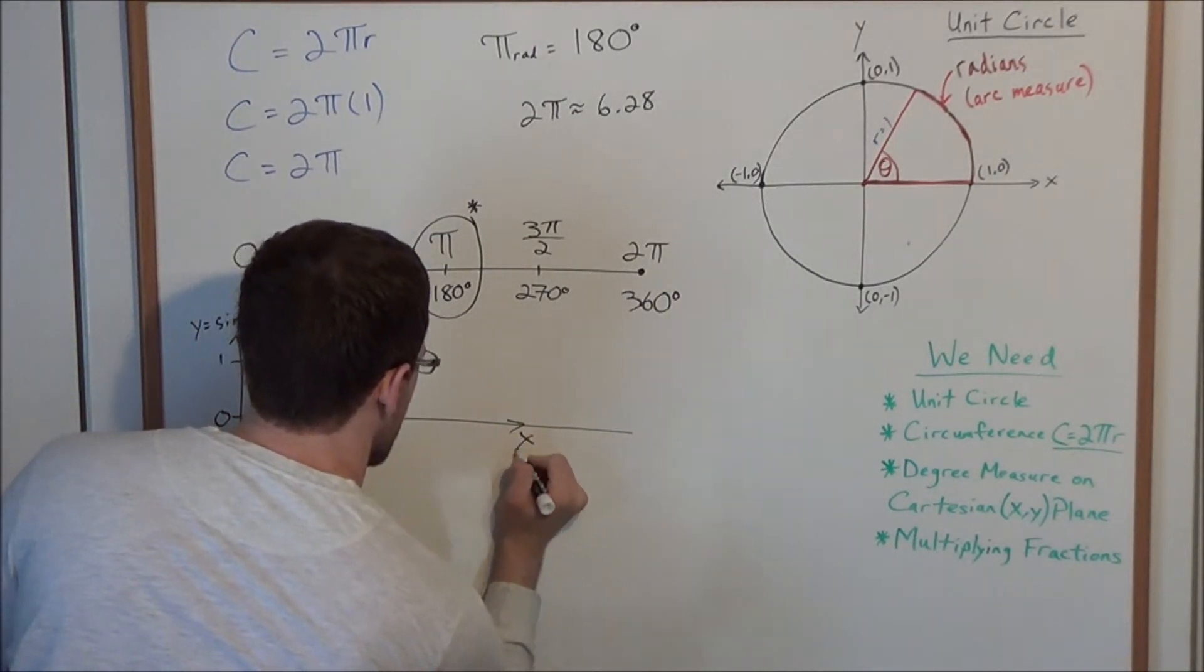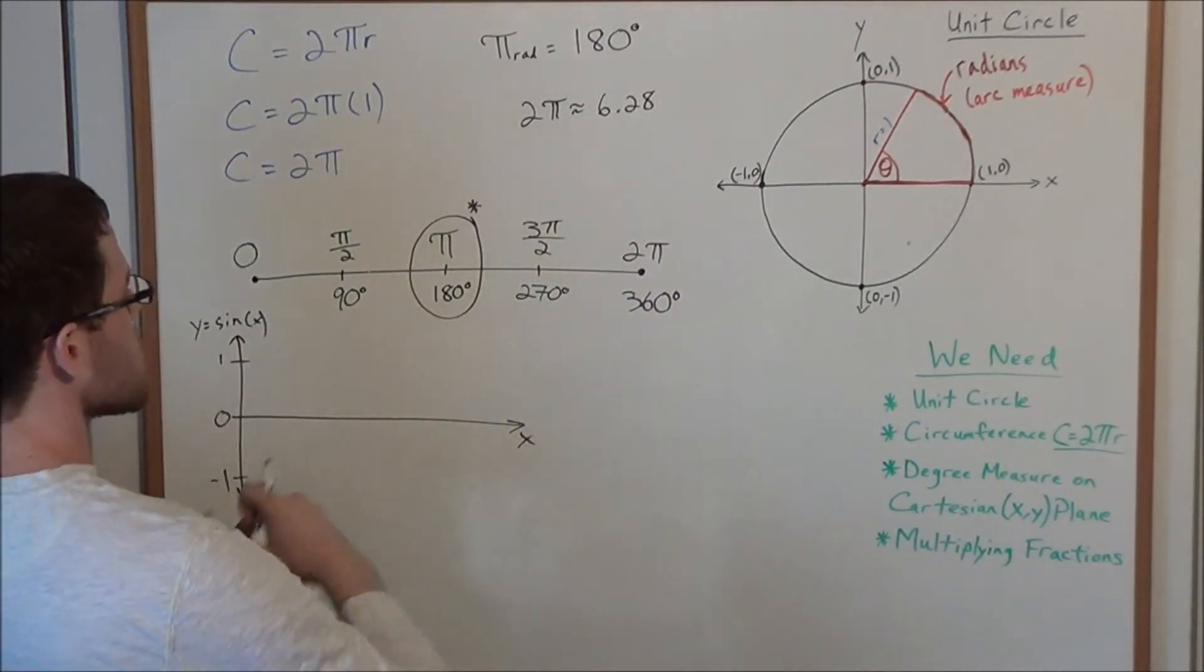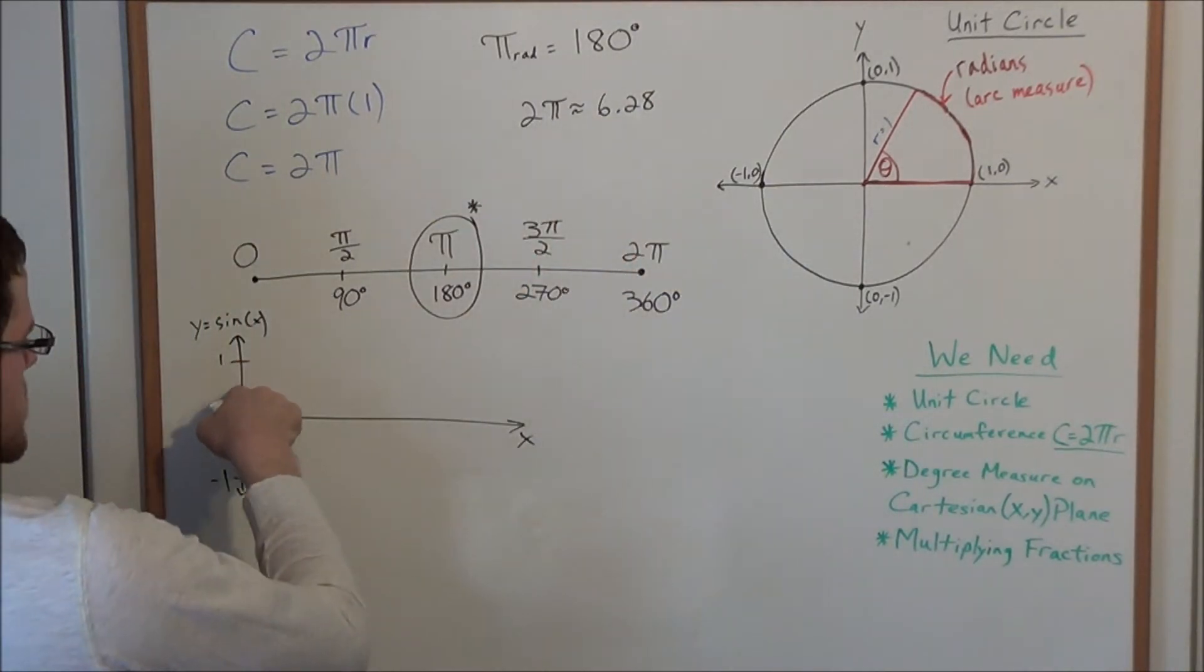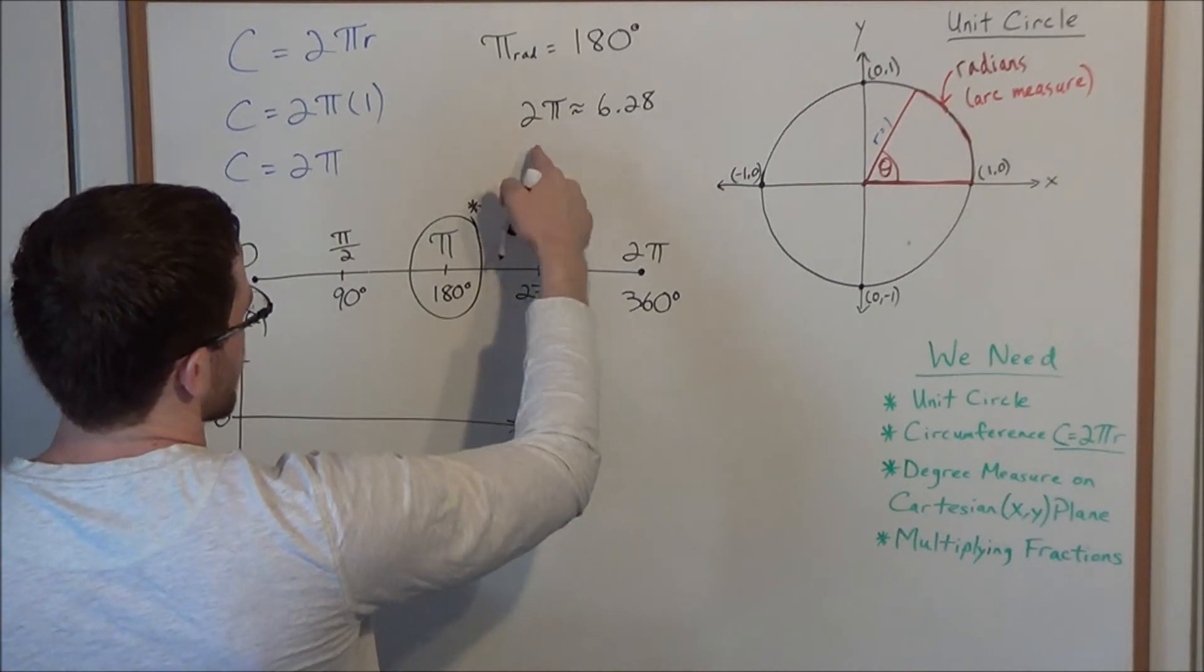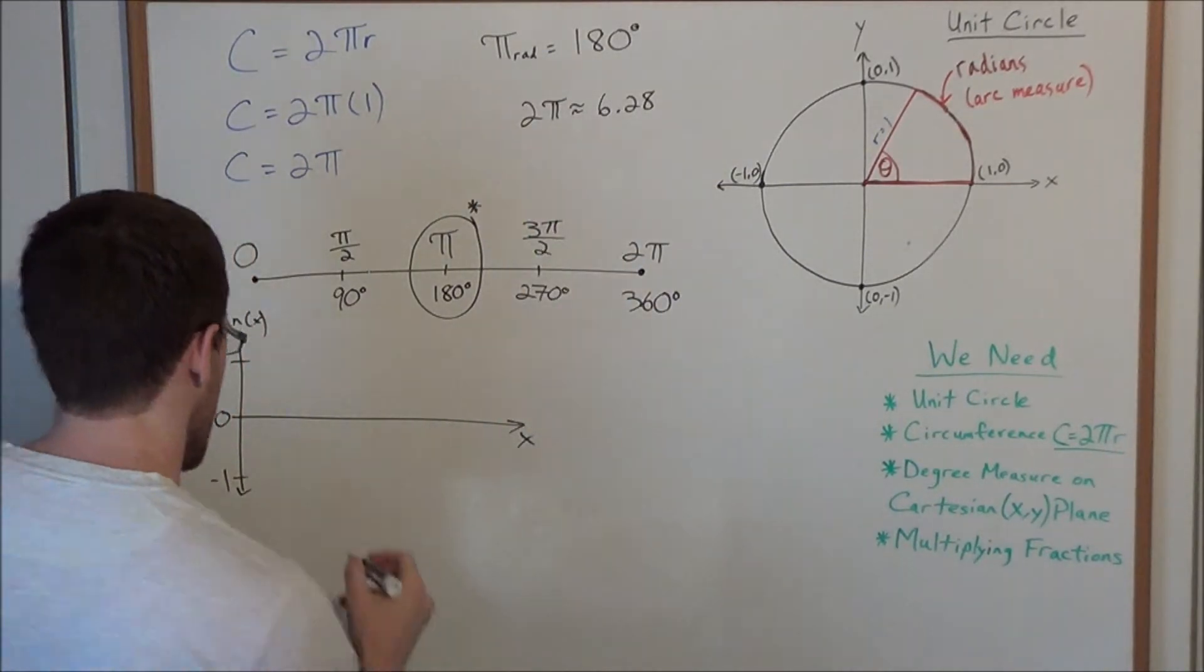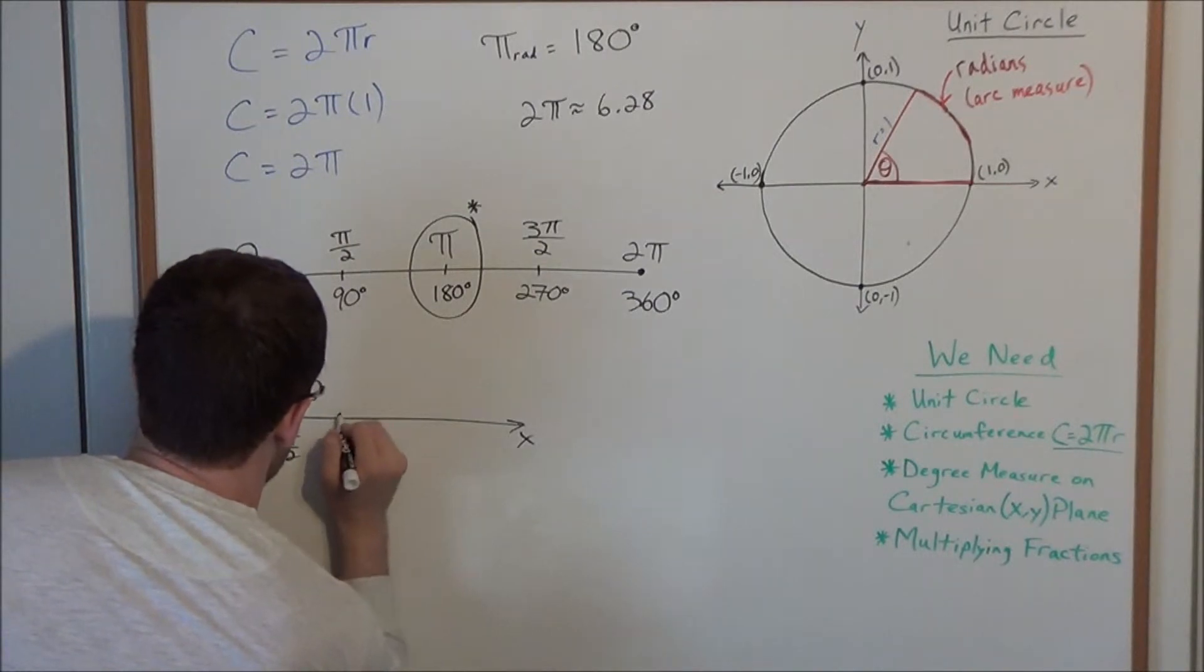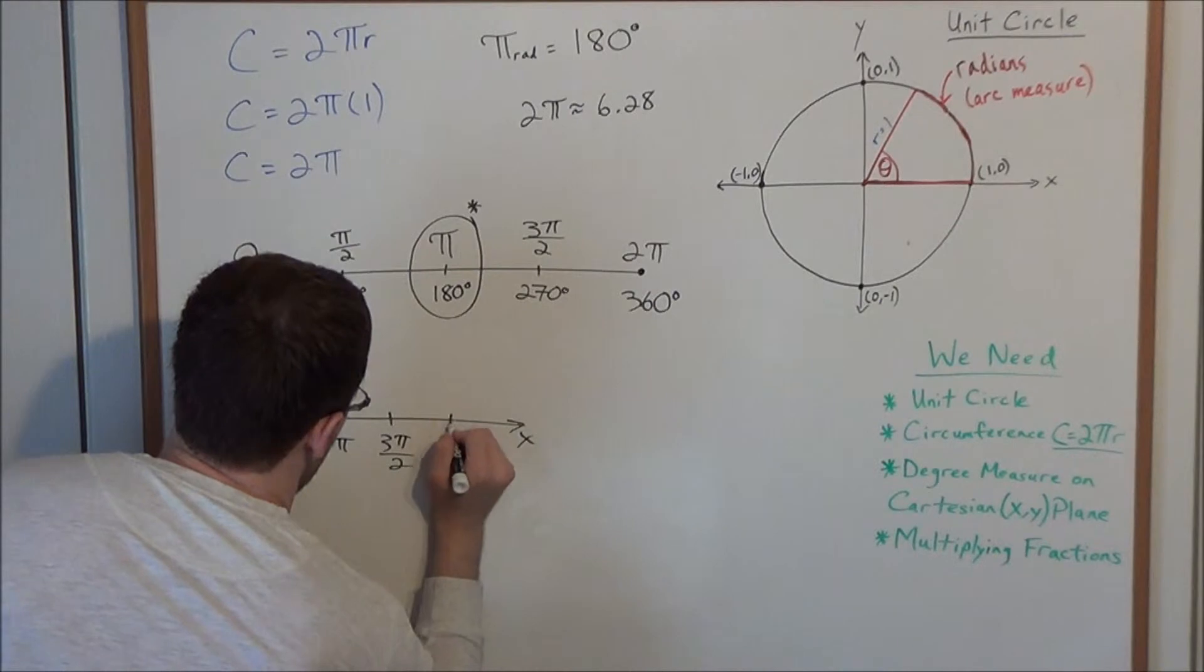The reason why we're interested in radians is because our scale is going to go, the range is going to go from 1 to negative 1, and now our domain is going to get cut off at roughly 6.28. So when we're looking at a graph of this, π/2, π, 3π/2, 2π.